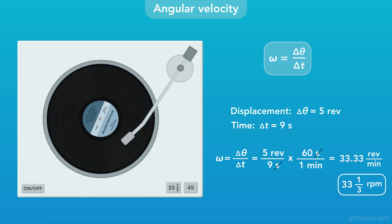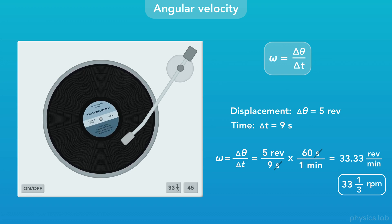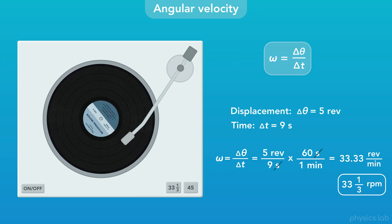If you play a record too fast or too slow, the music won't sound right, so it's important that the angular velocity is perfect. You might have noticed that this record is rotating in the clockwise direction, and we said earlier that clockwise is the negative direction.